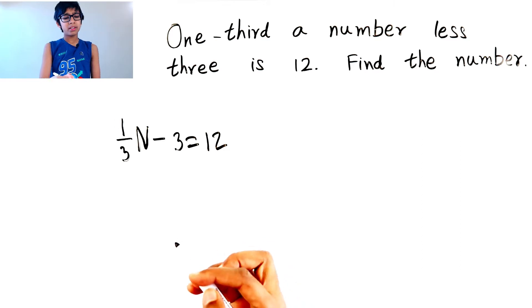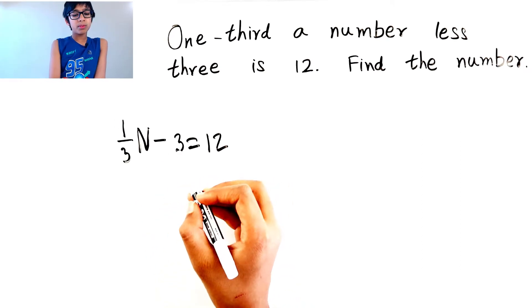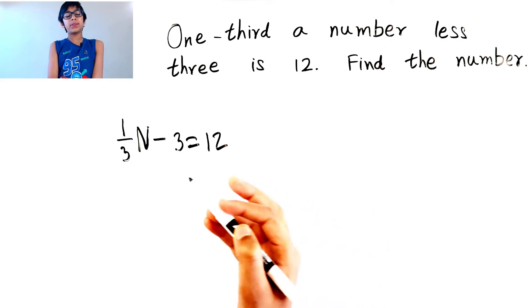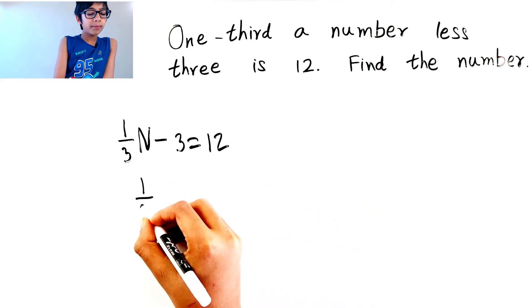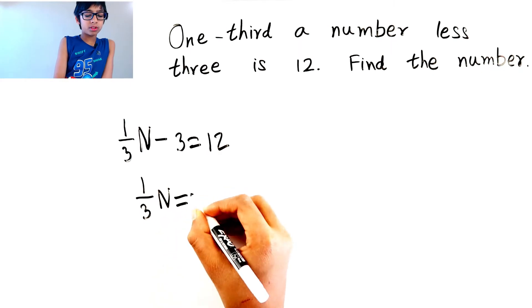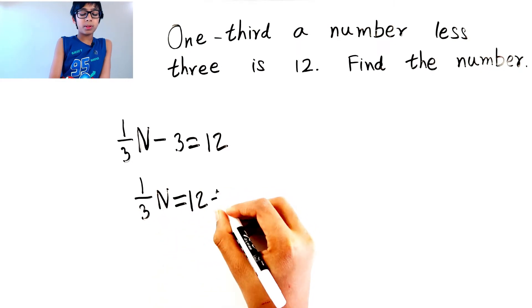Okay, so now let's carry the minus 3 over here. Then it'll become a plus 3. So one-third n equals 12 plus 3.